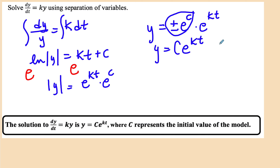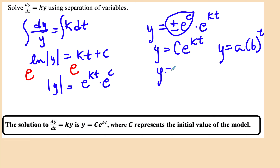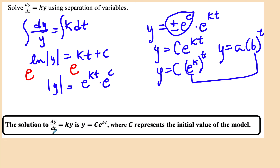Comparing this to the original form y = a·b^t, we can see that C and a both act as initial conditions. The term e^k is playing the role of b. So the solution of dy/dt = ky will always lead us to y = C e^(kt), where C represents the initial value of the model.